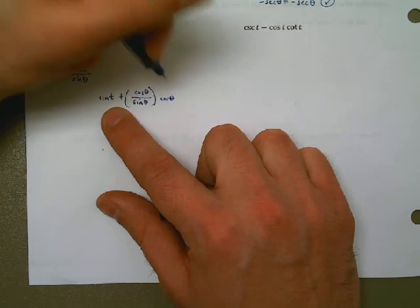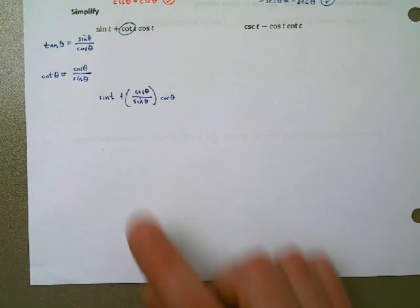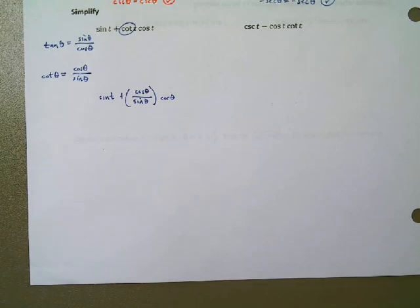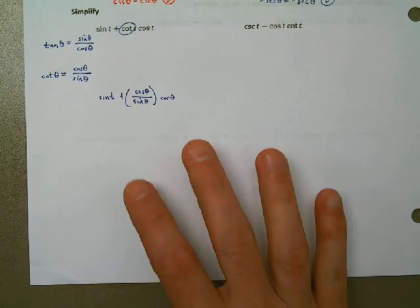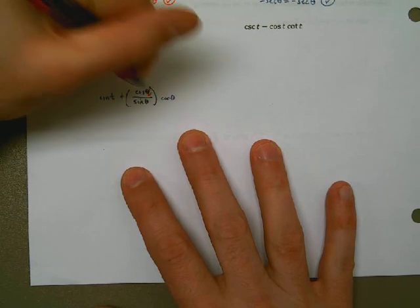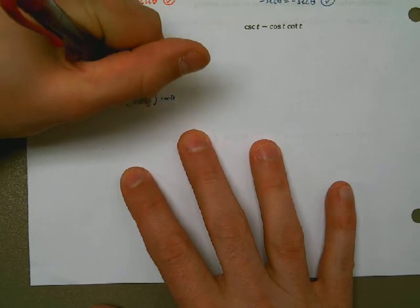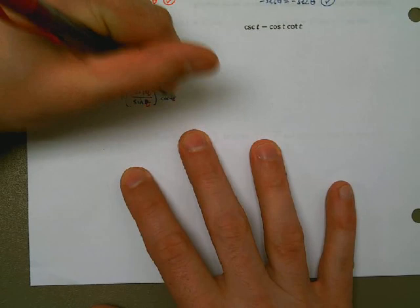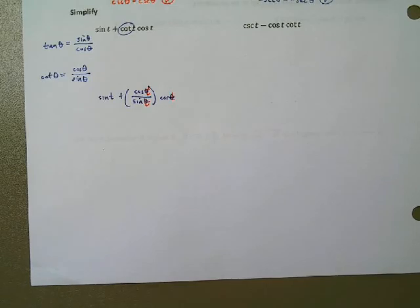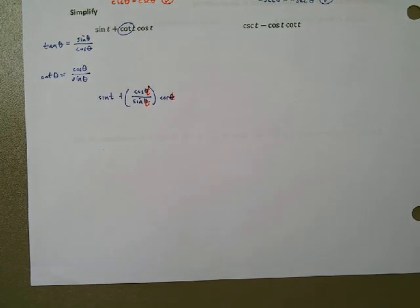I think back to my Pythagorean theorem and identities — I know what that is. That's just one. So that would be one over sine of t. But instead of writing it that way, let's write the reciprocal: one over sine would be cosecant. That is about as simple as it gets. If I was presented with two options, I would rather work with cosecant — much simpler.